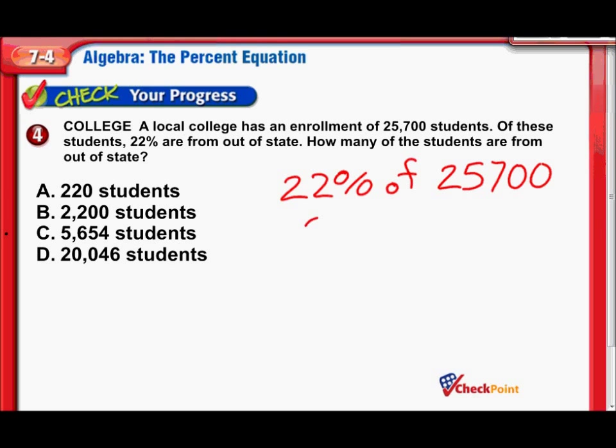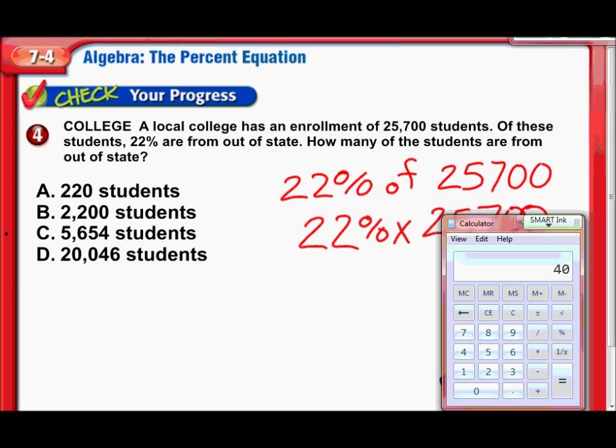So that would turn into 22% of, as we know, means times 25,700. So that's all we have to do is just multiply, knowing that of means multiplying. So we do 22%, that would be 0.22. Just move that decimal 2 to the left. And now times the 25,700. And we end up with 5,654. There it is. We got it. So it turns out that 5,654 of this college's students are from out-of-state.